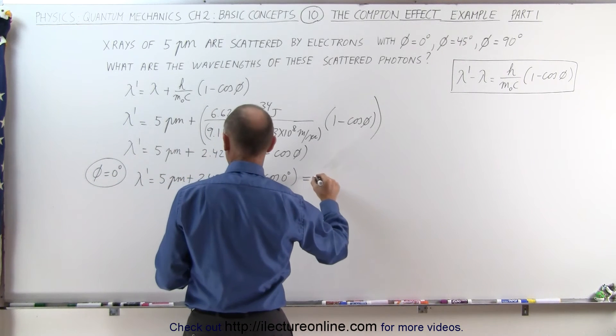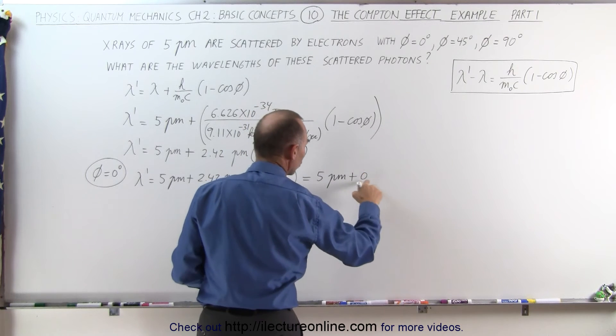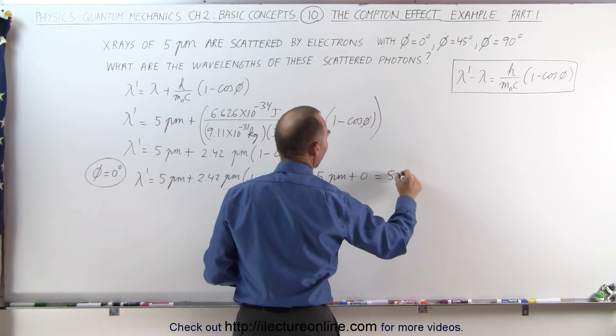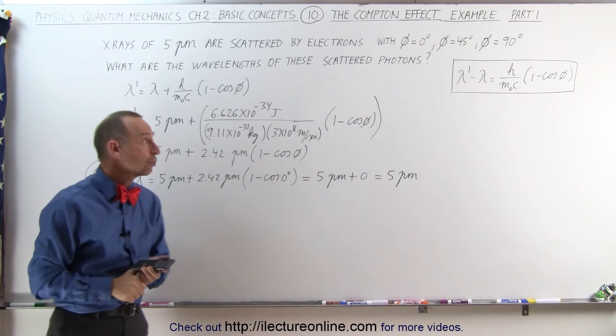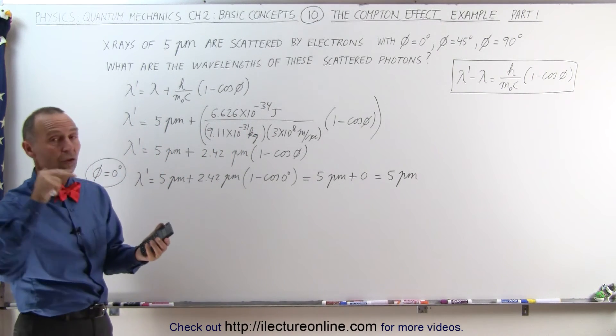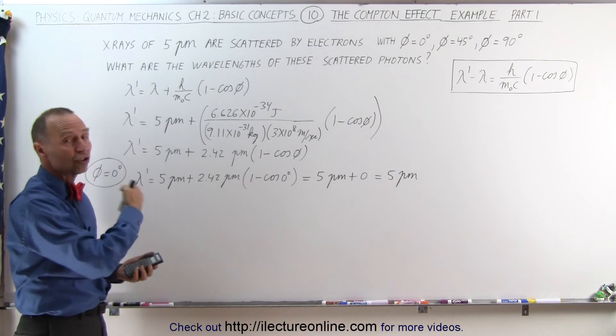So this is simply equal to 5 picometers plus 0. There's no change, simply 5 picometers. In other words, if there's no interaction between photons and the electrons, they'll just go straight through. No interaction means no loss of energy and no change in the wavelength.